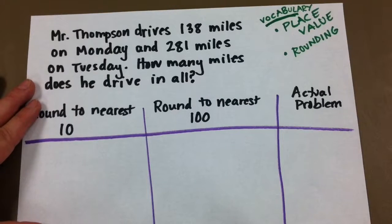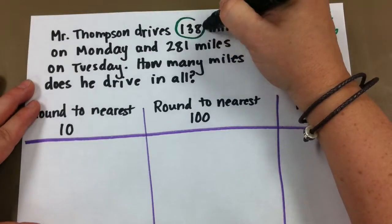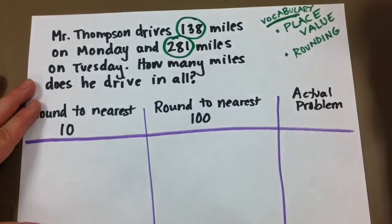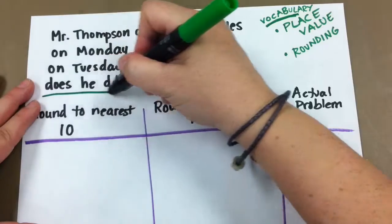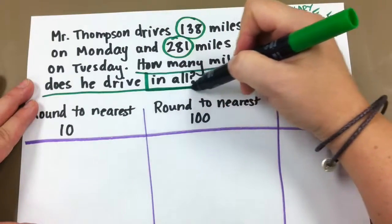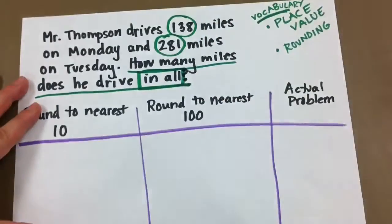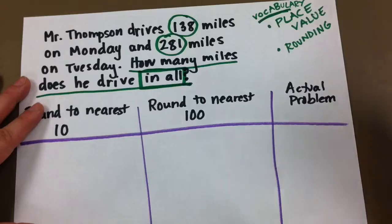Okay, so we're going to practice a math problem and our rounding skills. I know you've been practicing this in your math class. Mr. Thompson drives 138 miles on Monday and 281 miles on Tuesday. How many miles does he drive in all? In all, that is some important text to box in our question. So we want to know how many he drove in all.